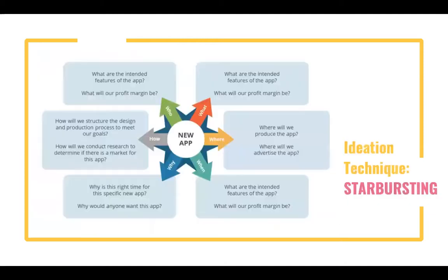Another ideation technique is called star bursting. Instead of finding answers, we generate questions — asking what, who, how, when. For example, if you are designing a new app: where will you produce the app, what are the features? Ask as many questions as possible. So you think about the different features of the app using this star bursting technique.